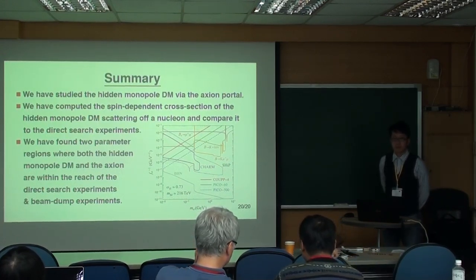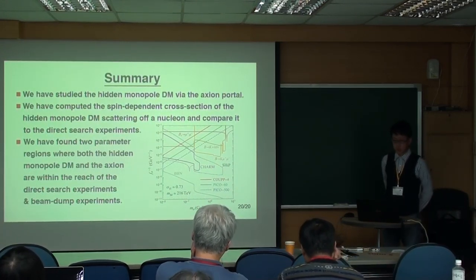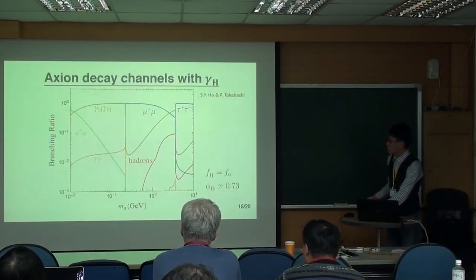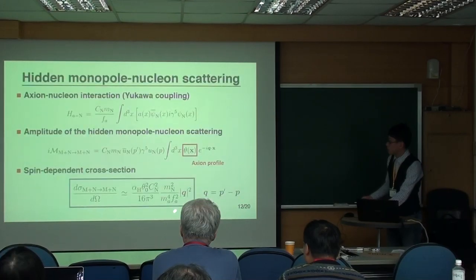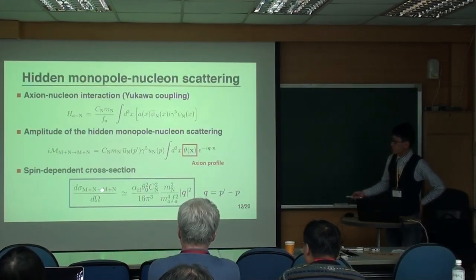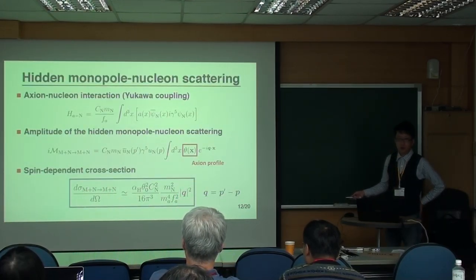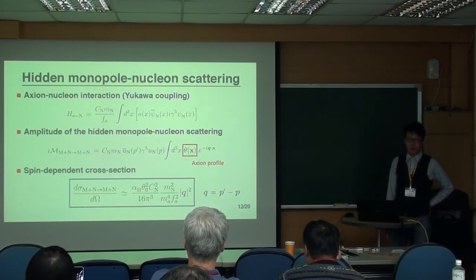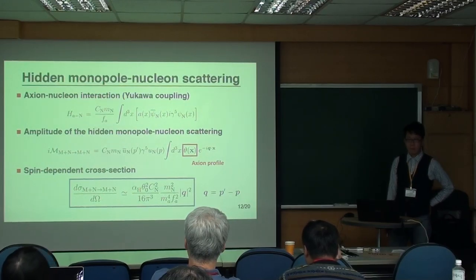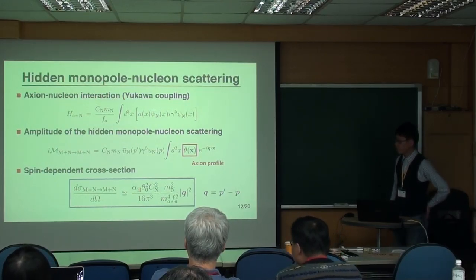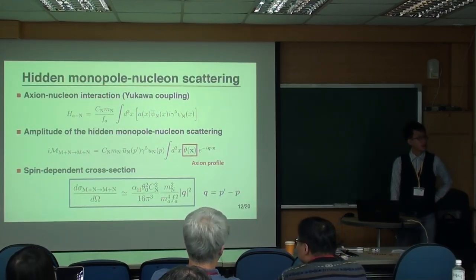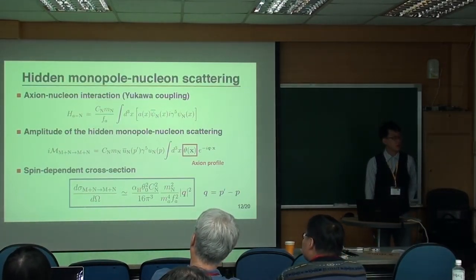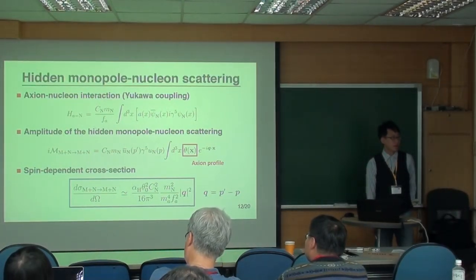Why do you only consider the P-coupling? And then on your page 13, you only show the P-coupling. Why don't we consider the S-coupling? Because you see that it is suppressed. So usually there is a nucleon mass factor. And then the nucleon mass is very big.